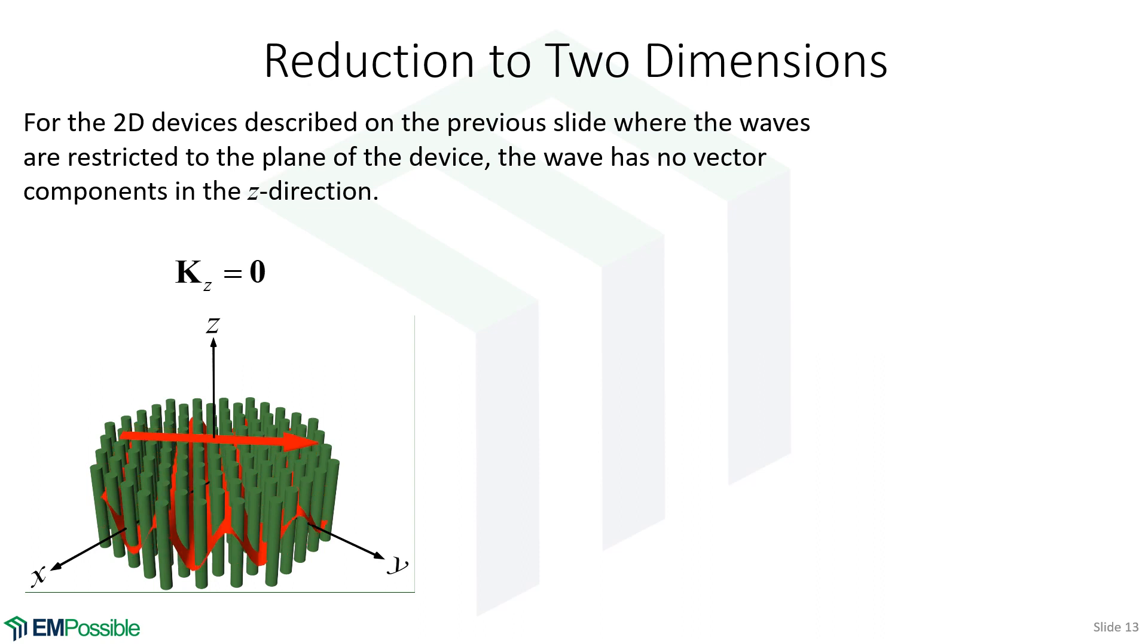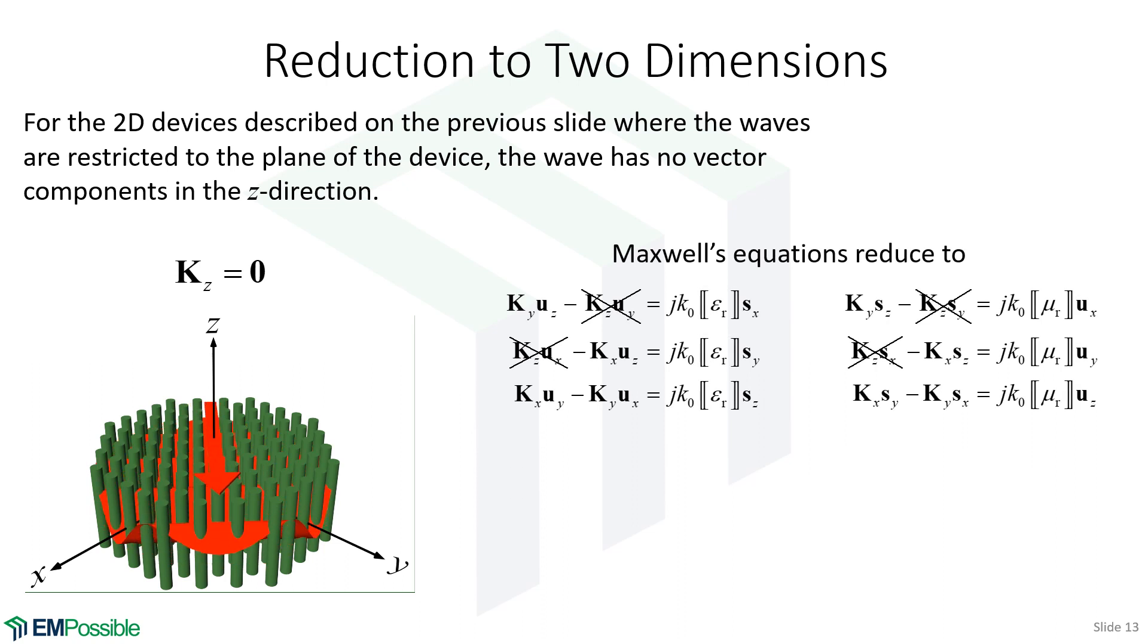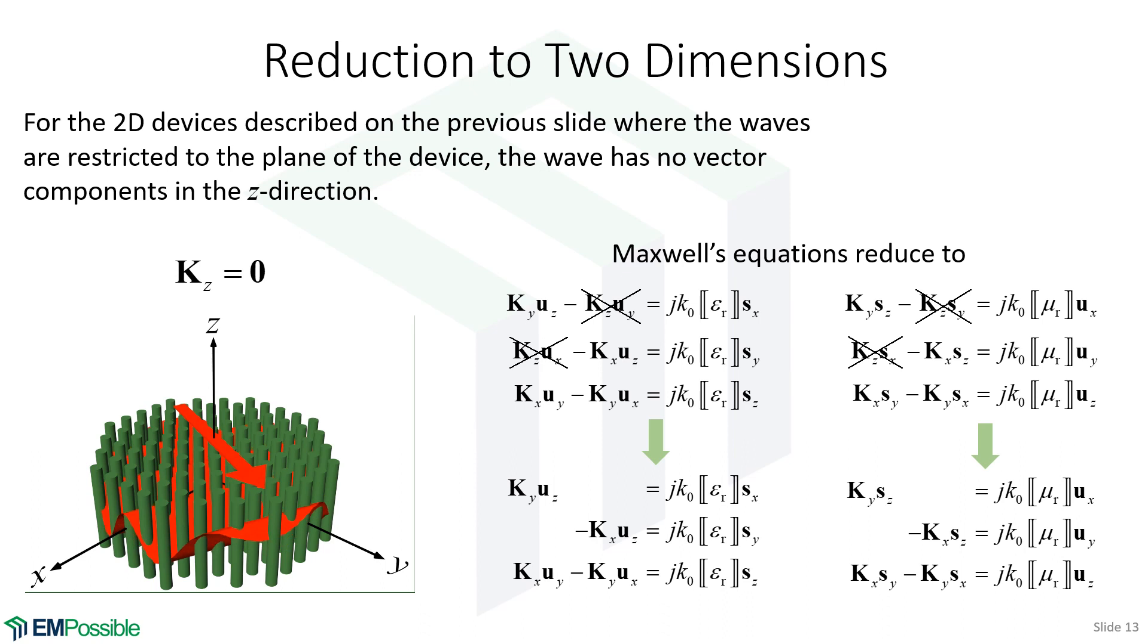So, numerically, how do we reduce this to two dimensions? Well, if propagation is restricted to the XY plane, and the device itself is uniform in that vertical direction, then we can set the Z component, that KZ matrix, we set all of those to zero. So, in our set of six matrix equations in Fourier space, anywhere there's a KZ, we can cross them off. And we end up with a new set of equations that contain no KZ terms. Now, something magical happens with these. Let's pick up that on the next slide.